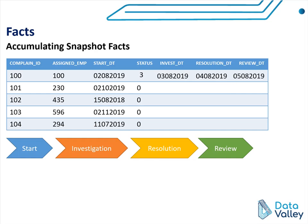So accumulating snapshot facts is well fit for any use case or any business process that requires monitoring and updating a certain process through all its stages. The grain here: one record in this type of fact table represents one process and all its updates.